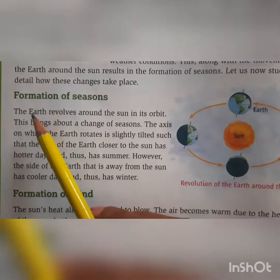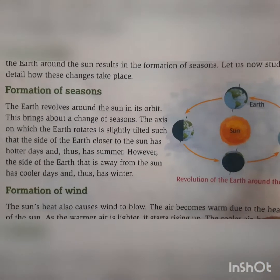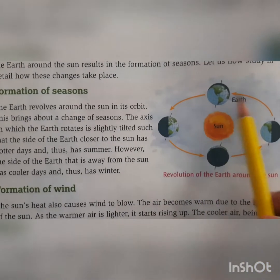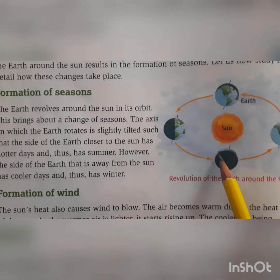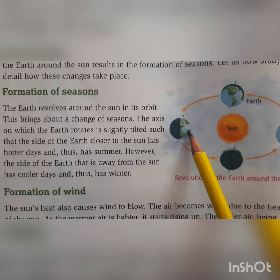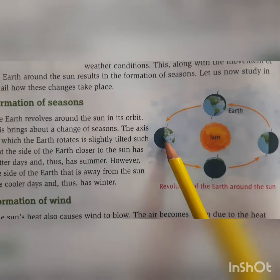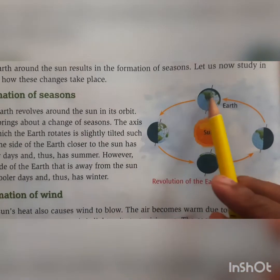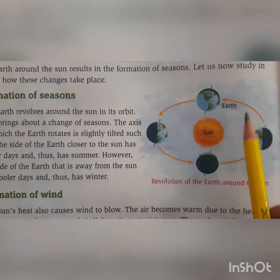Formation of seasons. The earth revolves around the sun in its orbit — you all know that. This is the sun and this is the orbit of the earth, a circular orbit. The earth keeps rotating around the sun. The phase where the sunlight falls is day, and the phase where there is no sunlight is night. As the earth is round, different surfaces come to the front and go to the back, and in this same manner the seasons also change.